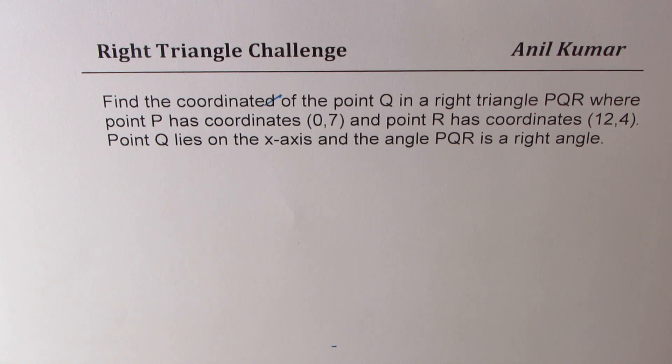The question here is: find the coordinate of the point Q in a right triangle PQR where point P has coordinates (0,7) and point R has coordinates (12,4). Point Q lies on x-axis and the angle PQR is a right angle.